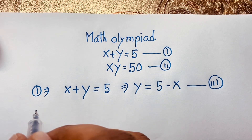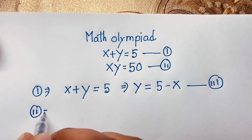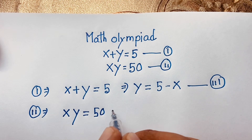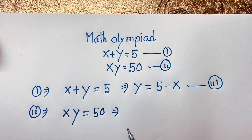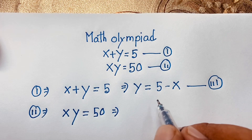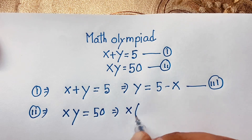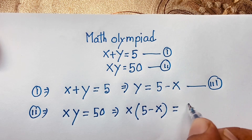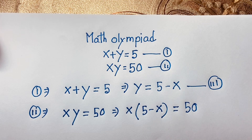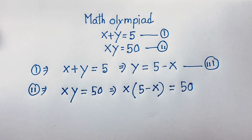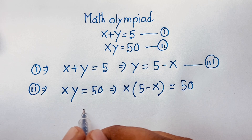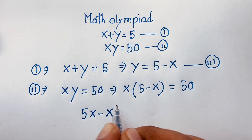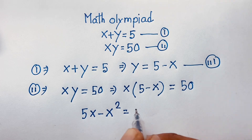Our second equation is x times y is equal to 50. We know that y is equal to 5 minus x, so we substitute: x times (5 minus x) is equal to 50. Expanding, 5 times x gives 5x, and x times x gives x squared, so we have 5x minus x squared is equal to 50.